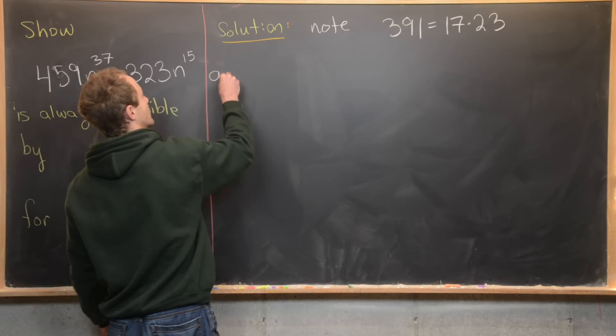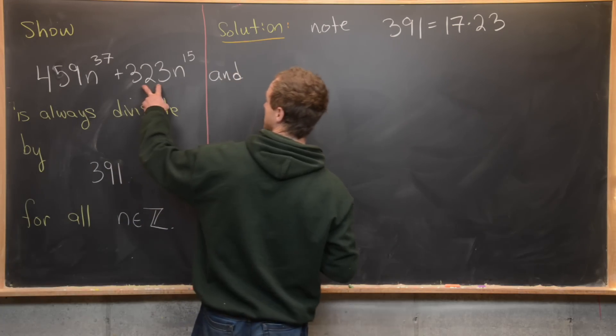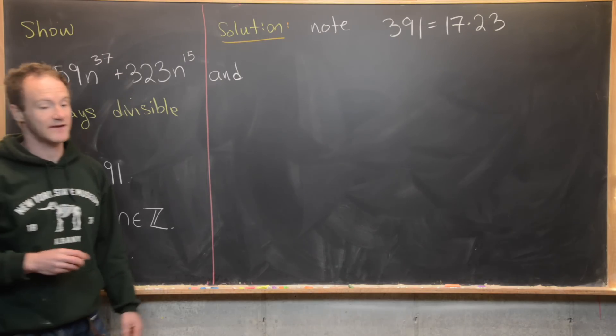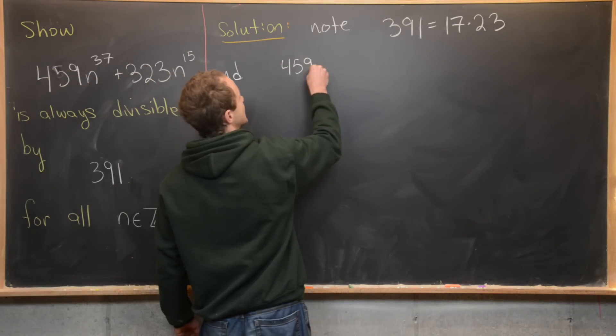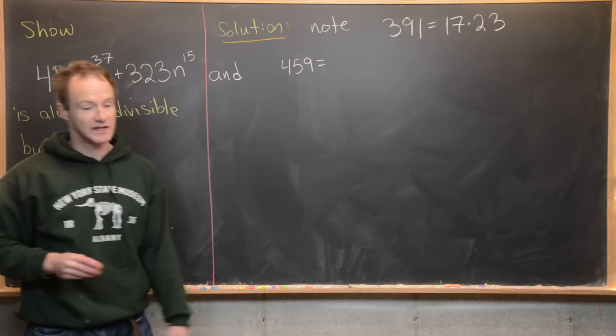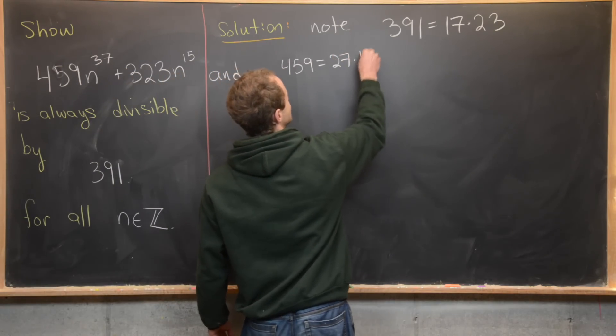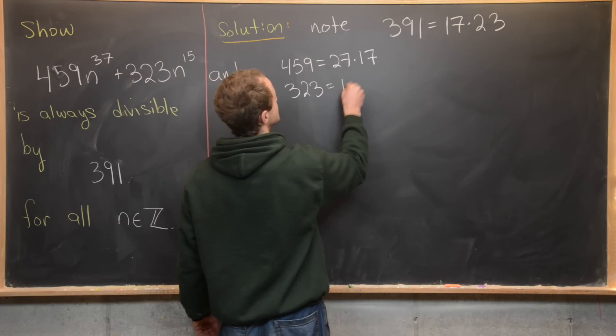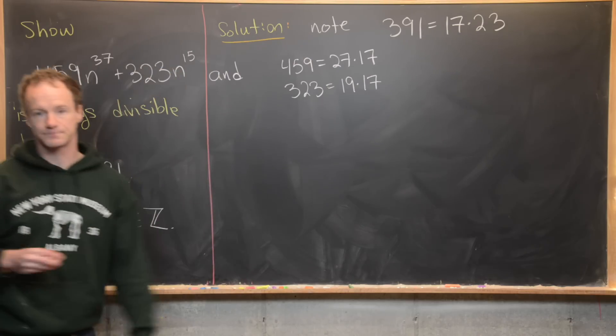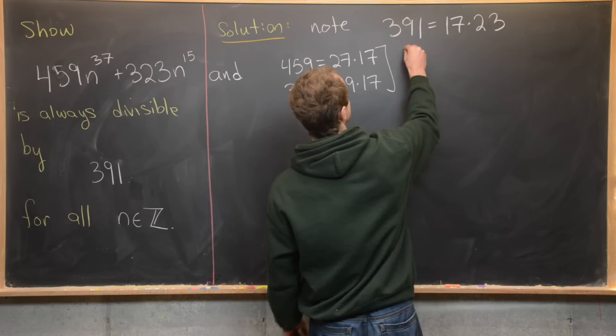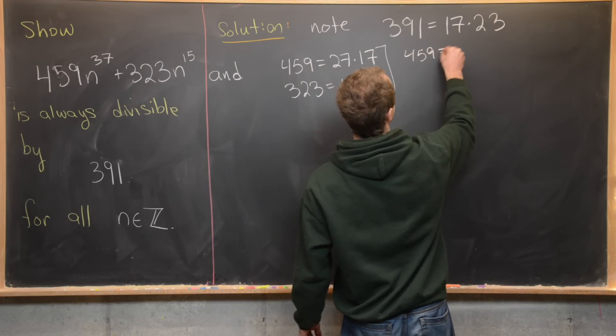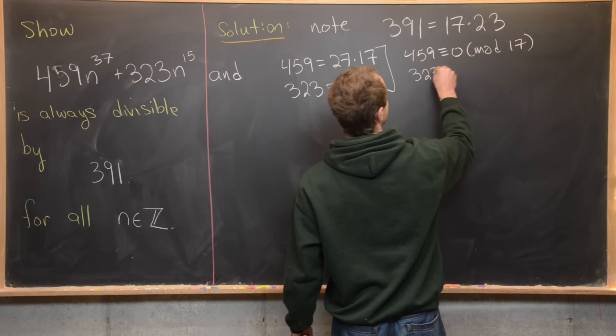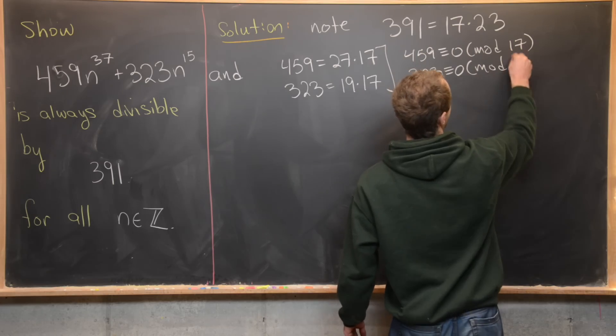The next thing to notice is that these two coefficients 459 and 323 are multiples of 17. We can write 459 as 27 times 17, and 323 equals 19 times 17. Notice that tells us 459 is congruent to zero mod 17, and furthermore, 323 is also congruent to zero mod 17.